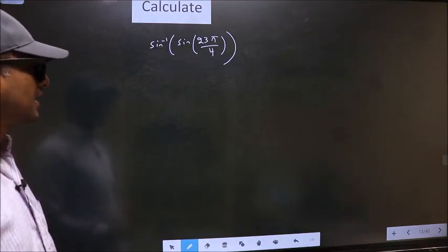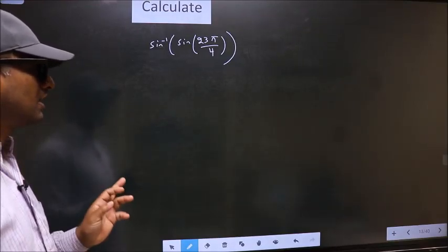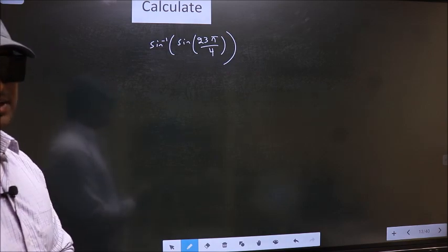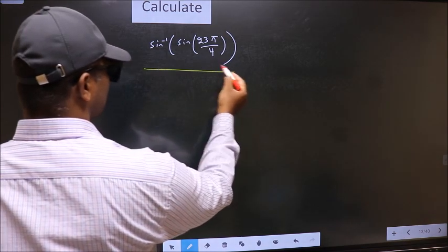Calculate sin inverse sin 23 pi by 4. How do we calculate this? We should get the answer to this one.